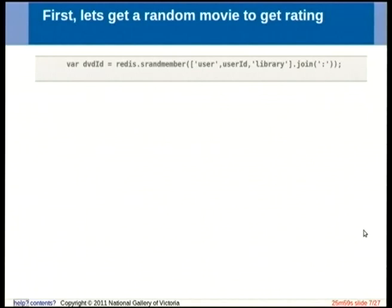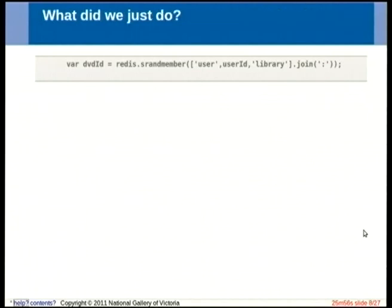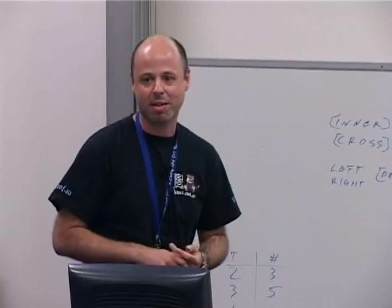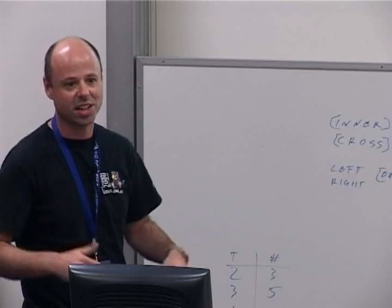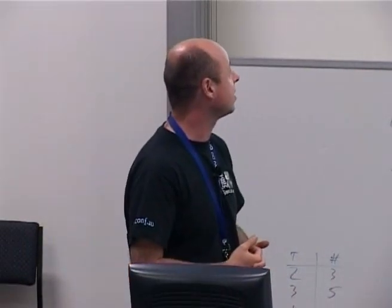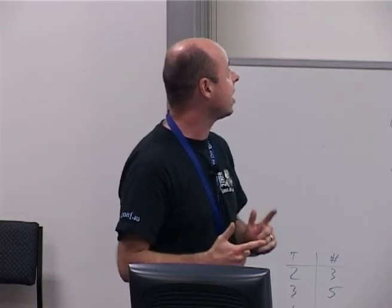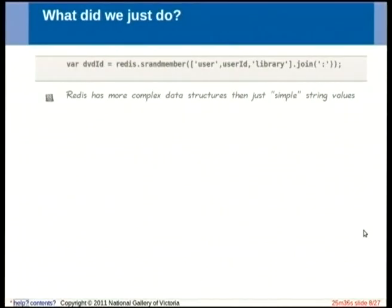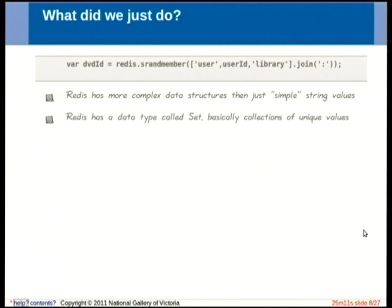The first thing we want to do is get a movie to rate — grab one of your DVDs from the user's existing library. The user's already got a list of DVDs in their library that they've put in there previously. This illustrates that Redis has more complex data structures than some other key-value stores. It's got a data structure called a set — basically a collection of unique values. It can be anything, just a collection of more values under one key.